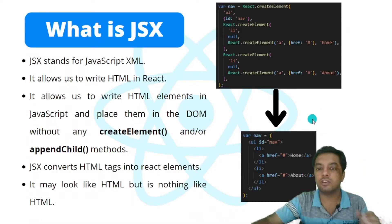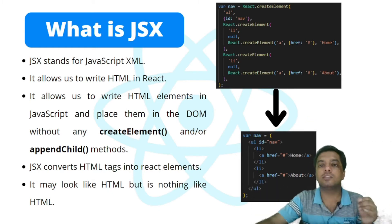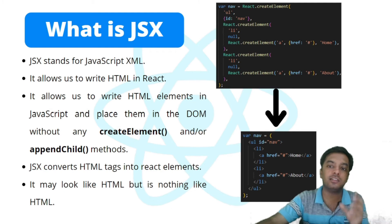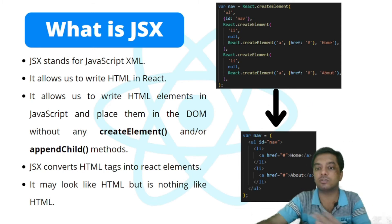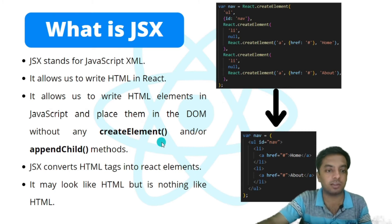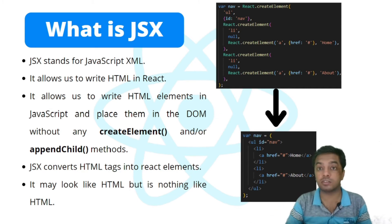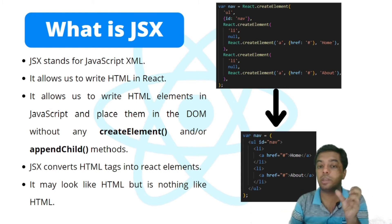But what if we were using JSX? With JSX, the code is much simpler — we directly write it like HTML. You might say this code looks like HTML, but the main difference is that HTML code is written in a .html file, whereas JSX is written inside a JavaScript file. It may look like HTML, but in terms of how it works, it is nothing like HTML. JSX converts HTML tags into React elements.